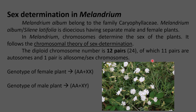Melandrium album follows the chromosomal theory of sex determination, meaning chromosomes determine the sex of the plants. In diploid condition, there are 12 pairs of chromosomes: 11 pairs are autosomes (somatic chromosomes) and one pair is allosomes or sex chromosomes. The female plant carries XX chromosomes and the male plant carries XY chromosomes, making Melandrium album a model example for XX-XY type sex determination.